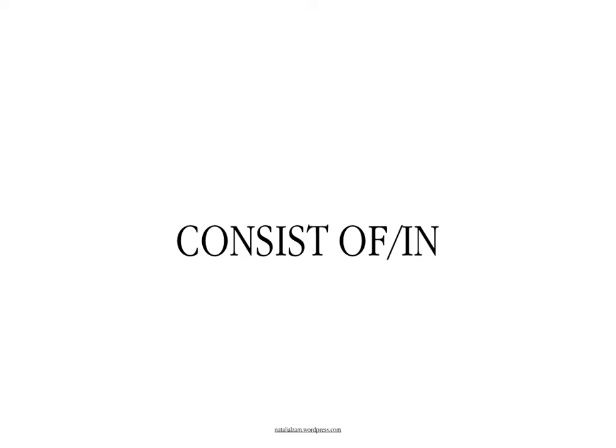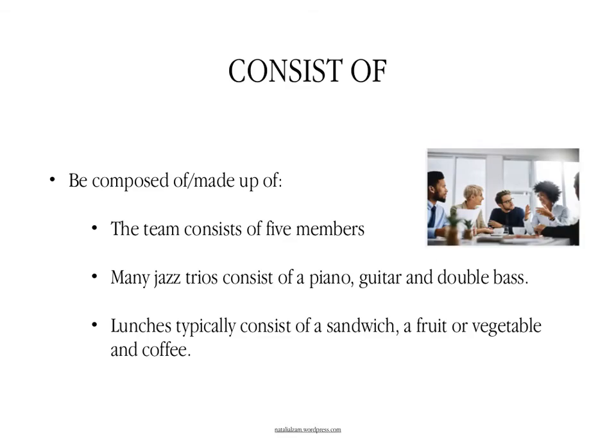In English, if you want to use the verb 'consist,' it may be followed by two possible prepositions: either 'consist of' or 'consist in,' and there is a difference in meaning. You say that something 'consists of' and then typically a number or the elements that make up that particular thing or subject — you're basically saying that what you're referring to is composed of or is made up of.